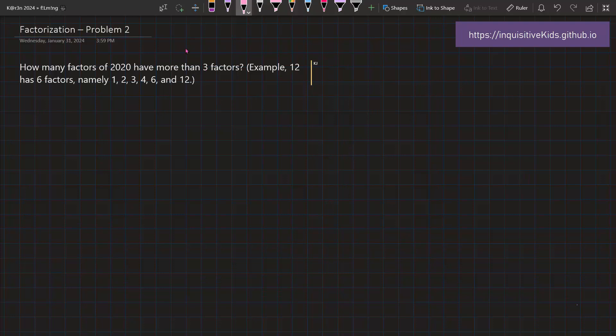So again, we have to start off by writing out the prime factorization of 2020. 2020 is equal to 2² times 5 times 101.